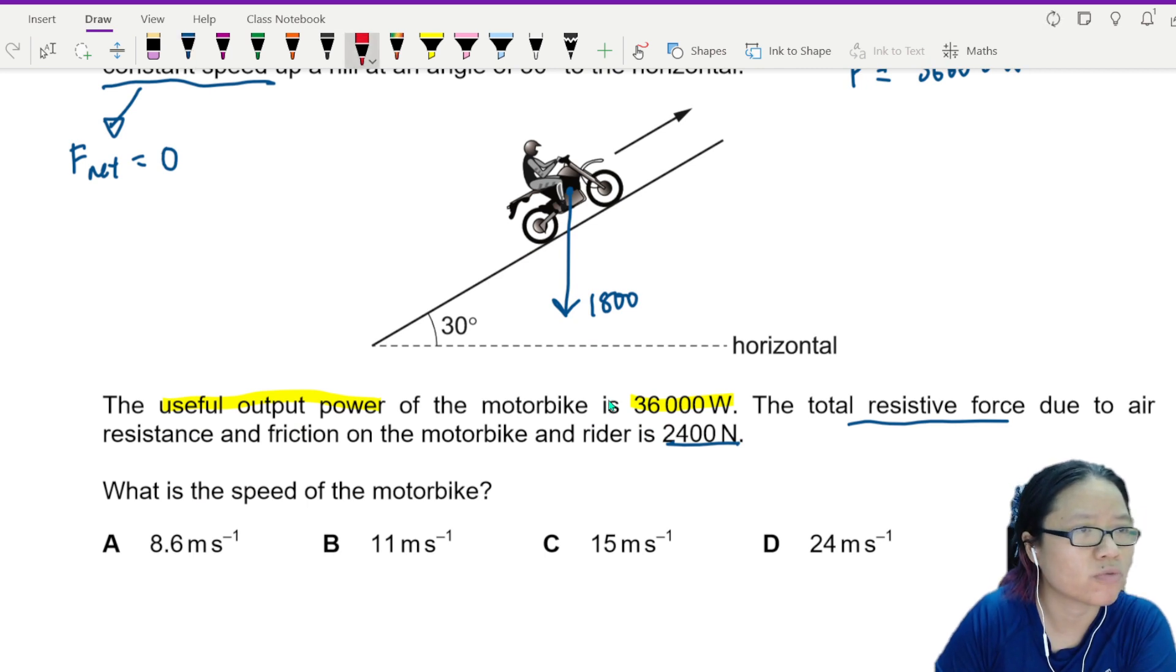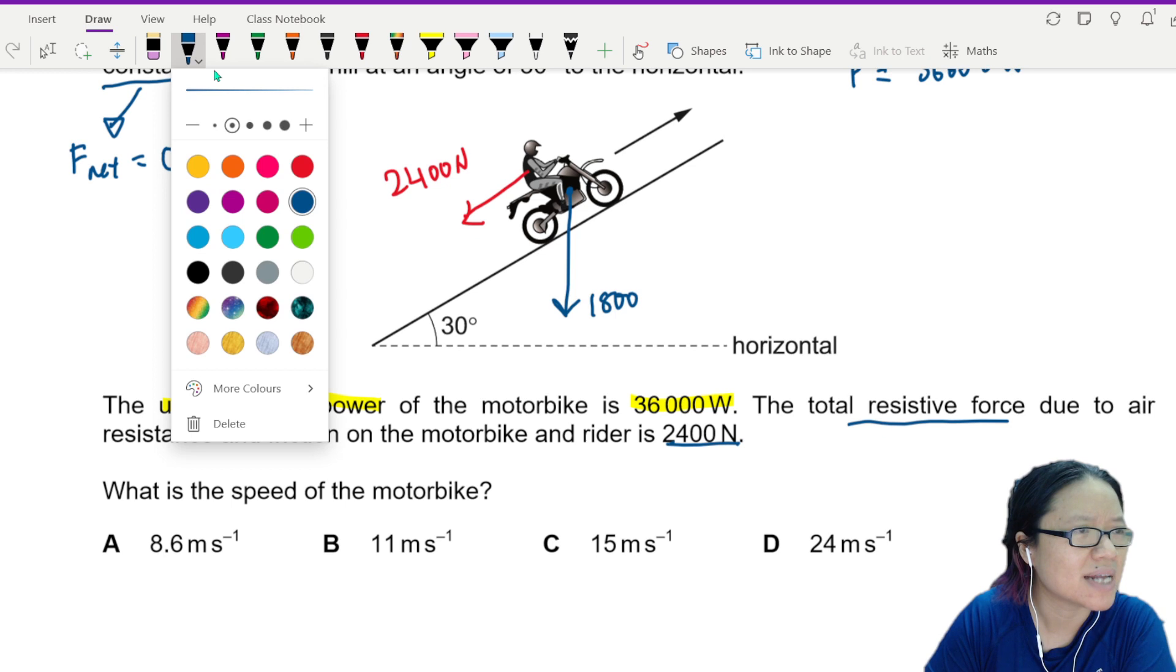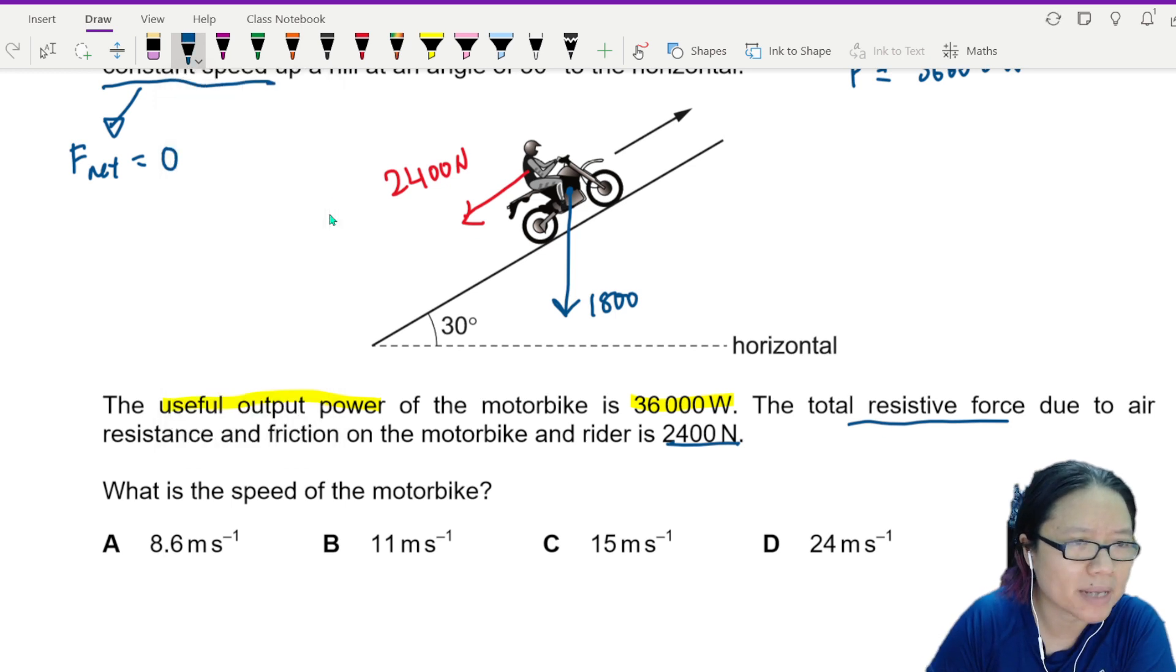I'm going to draw the forces now. I have the friction or the resistive force, 2400 newton. And then I have the weight component that is acting down the inclined plane.